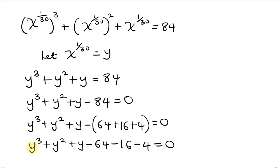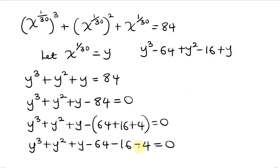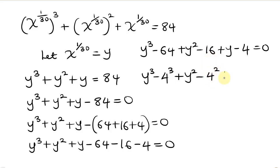Now rearranging, we pair the perfect cube y cubed with negative 64, which is also a perfect cube, so minus 64. Then we pair the perfect square y squared with negative 16, so minus 16. And we pair y with minus 4. Simplifying, we have y cubed minus 64, which can be written as y cubed minus 4 cubed, plus y squared minus 16, written as y squared minus 4 squared, plus y minus 4, all equal to 0.